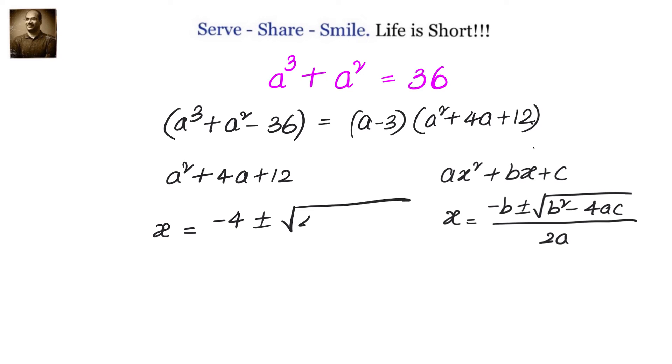Let us calculate that by using the quadratic formula. We have x = (-B ± √(B² - 4AC)) / 2A. Substituting B = 4, A = 1, and C = 12.